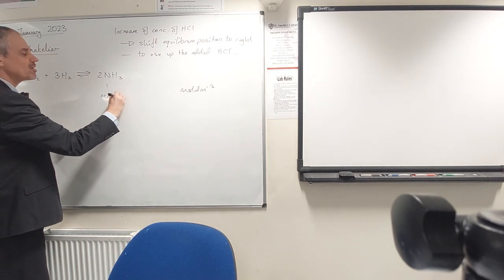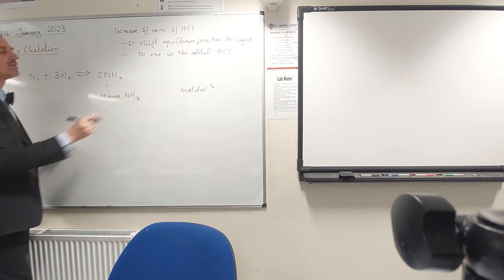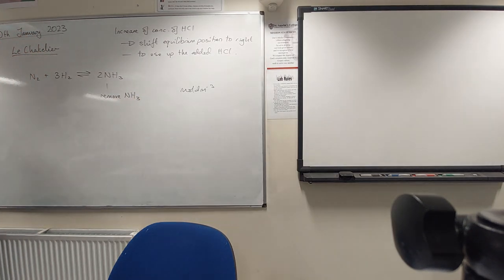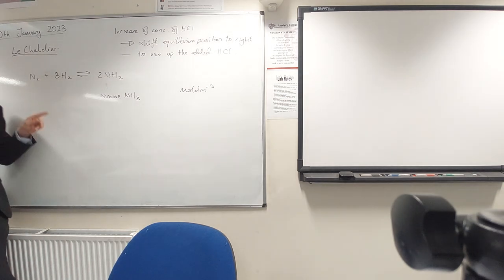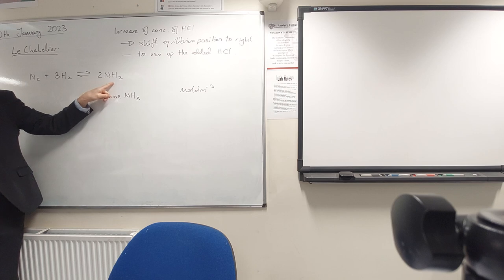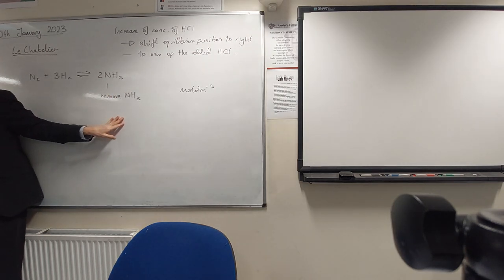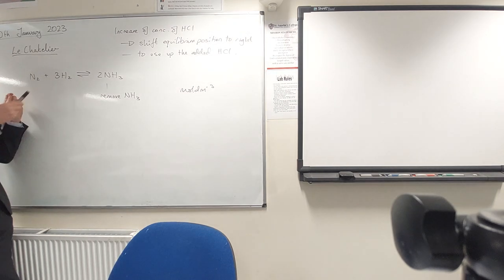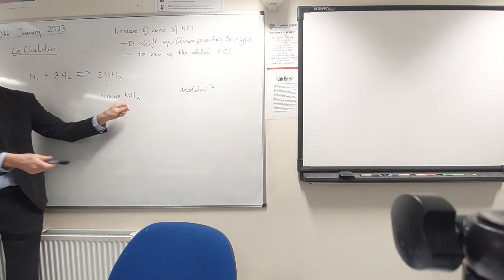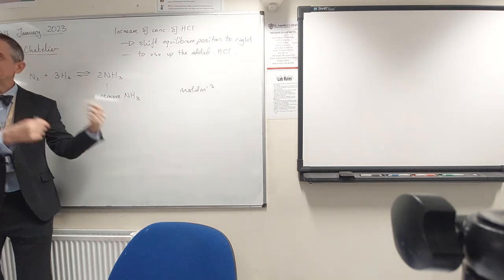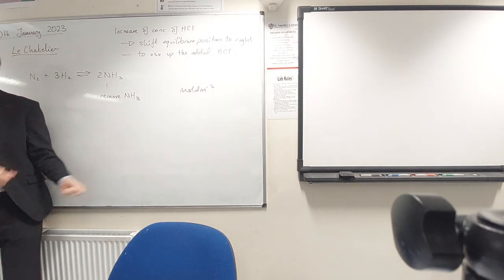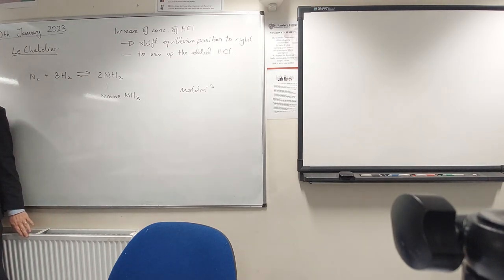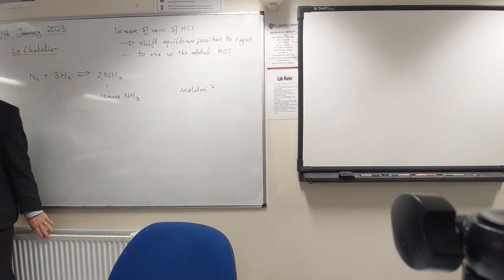OK, so if we remove ammonia, then having removed it, the equilibrium will have to minimize that change. So it shifts to the right to make more ammonia to replace the ammonia that's been taken. So we can work it in that way as well. We can add reactants, which will push the equilibrium to the right. There's a limit to the amount we can do that. Or we can remove products, in which case the equilibrium will try and generate some more for us just to make up for the fact that the products have gone.